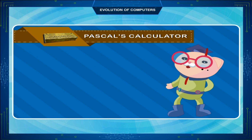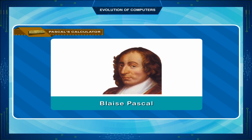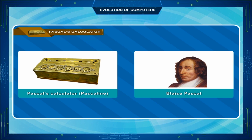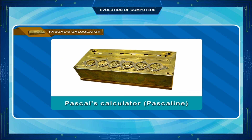Pascal's Calculator: In the year 1642, Blaise Pascal, a French scientist, invented an adding machine called Pascal's calculator, which represents the position of a digit with the help of gears in it.